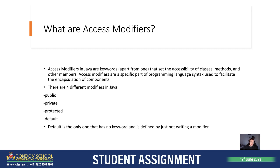So let's start from what they are. They are keywords, apart from one, that set the accessibility of classes, methods and other members. Access modifiers are a specific part of programming language syntax used to facilitate the encapsulation of components.